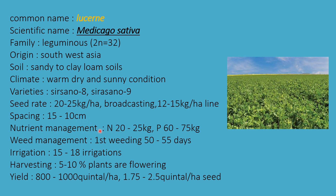Nutrient management: nitrogen 20 to 25 kg and phosphorus 60 to 75 kg per hectare; phosphorus applied in basal doses. Weed management by manual weeding. Irrigation: 15 to 18 irrigations required for the entire crop. Harvesting when 5 to 10 percent of plants start flowering. Yield is 800 to 1000 quintals per hectare, with 1.75 to 2.5 quintals per hectare of seeds.